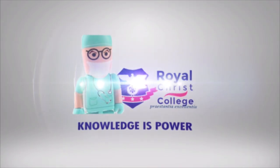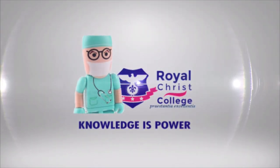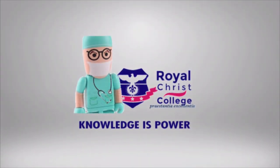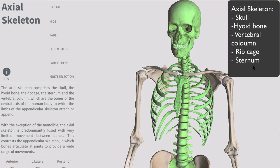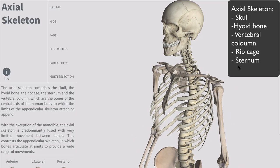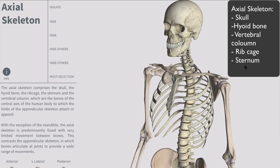Hey, what's going on guys, my name is Matthew Joes and today we're going to be looking at the axial skeleton. The axial skeleton is what's highlighted in green on the screen and it consists of the skull, the hyoid bone, vertebral column, rib cage and the sternum.